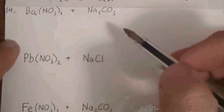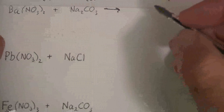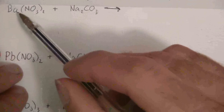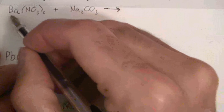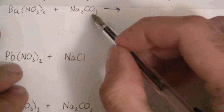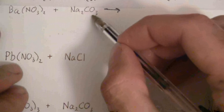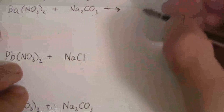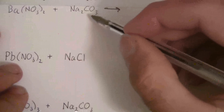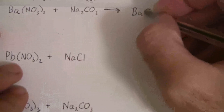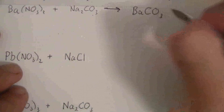Our goal is to write the net ionic equation. First we need to write the products, balance the equation, and then we can write the ionic and net ionic equations. To find our products, we take the cation from the first compound and combine it with the anion from the second one. So we have barium, which has a charge of positive two from the periodic table, and it's going to combine with carbonate, which is negative two.